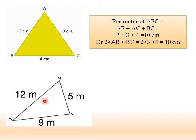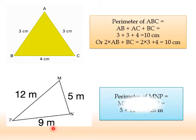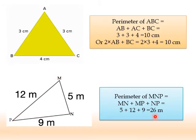Another triangle: PMN, where PM equals 12 m, MN equals 5 m, and NP equals 9 m. The three sides have the same unit, so we simply add them to find the perimeter. It is MN plus NP plus PM, which equals 5 plus 9 plus 12, equal to 26 m. It is very important to write the unit.